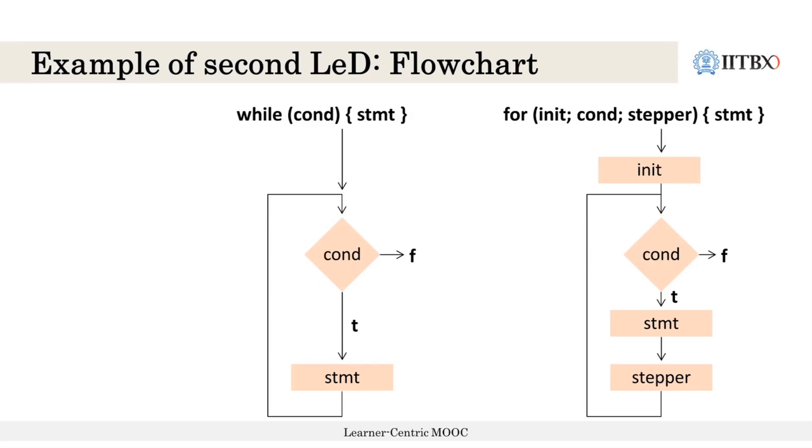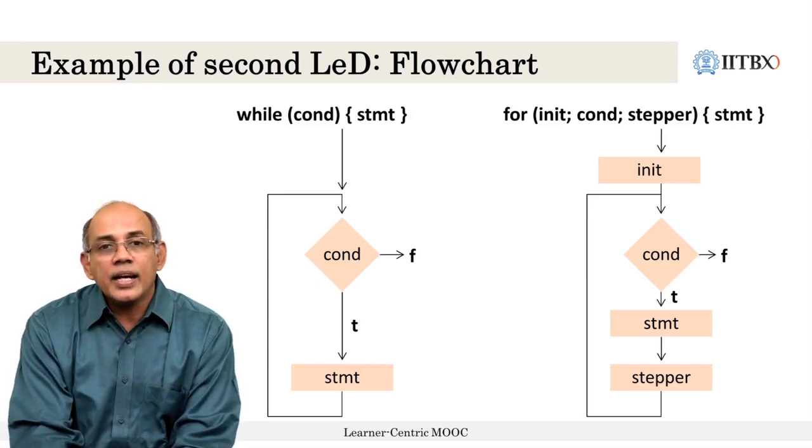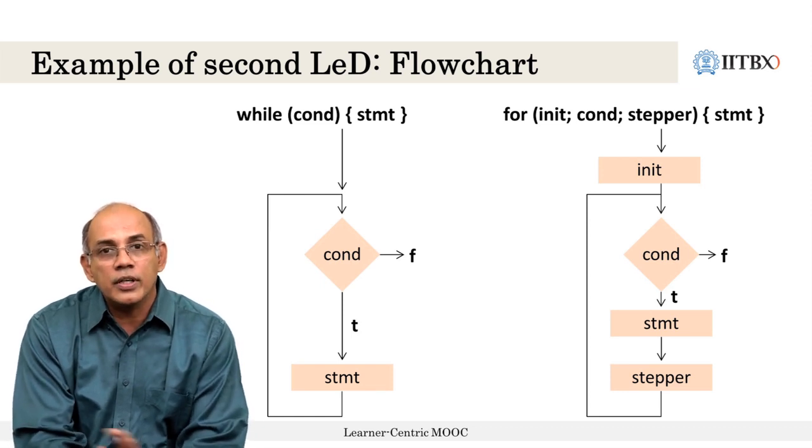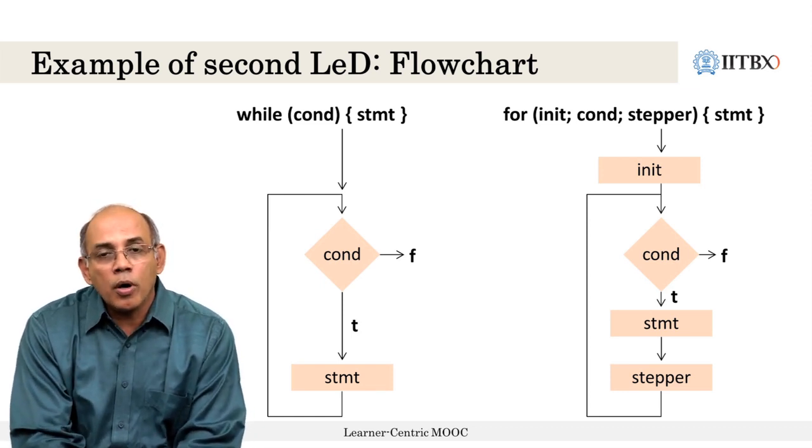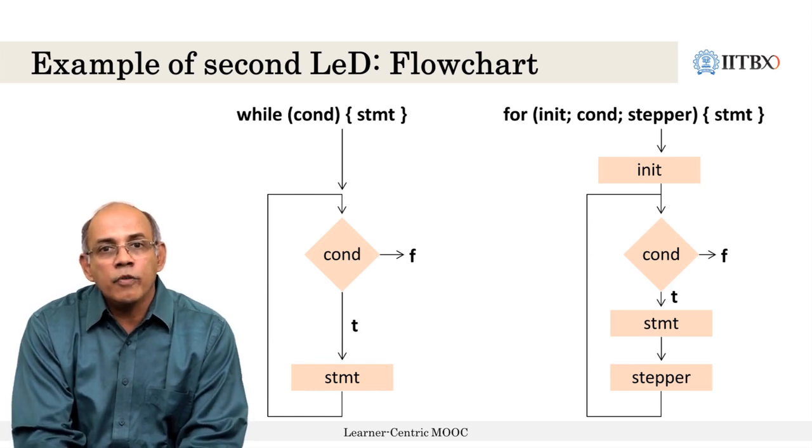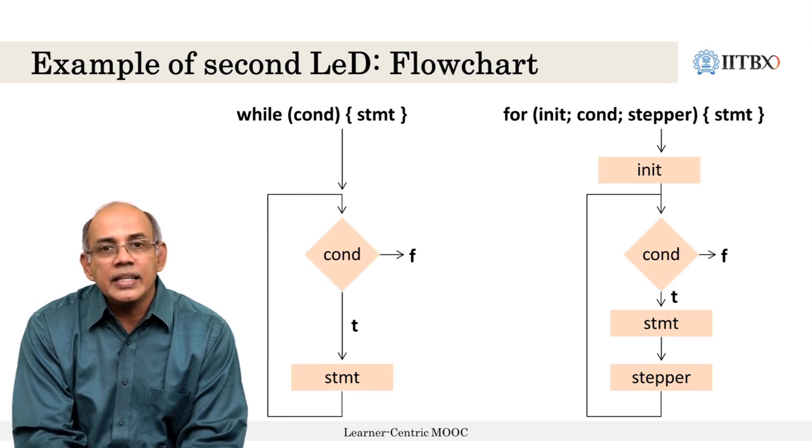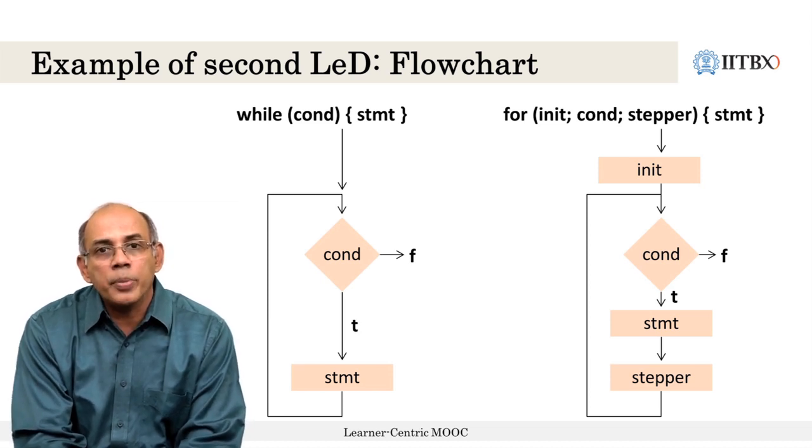Another LED could be on the difference between while loops and for loops. On the one hand, we could show the flowchart of a while loop versus the flowchart of a for loop. On the other hand, we could also have a discussion of the syntax of the two different loops. We could talk about entry criteria and exit criteria for both of these loops. This would be another LED that we can create for the topic of iterations.